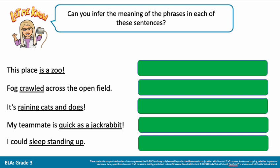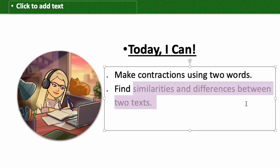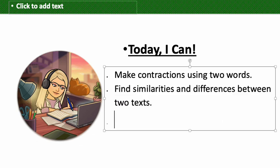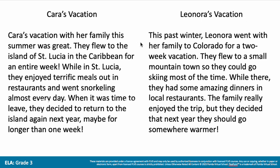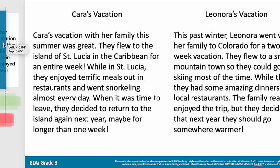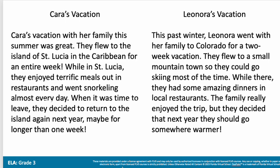Coming up next, we're going to compare similarities and differences between two different texts, just like in our 'I can' statements. We're going to look at two individuals: a girl named Kara and a girl named Leandra. Kara and Leandra are both going to go on vacation, but they might have different experiences. Kara's vacation with her family this summer was great. They flew to the island of St. Lucia in the Caribbean for an entire week.